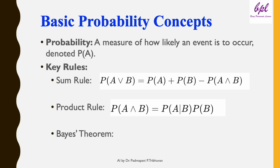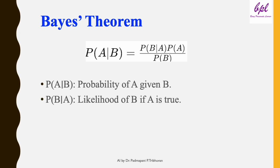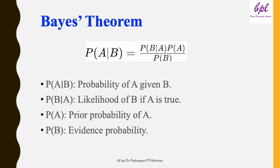And finally we have Bayes' theorem — the star of probabilistic reasoning. It allows us to update our beliefs when new evidence comes in. Bayes' theorem states: P(A|B) = P(B|A) × P(A) / P(B). Here, P(A|B) is what we want to calculate; P(B|A) is the likelihood of B assuming A is true; P(A) is the prior probability of A; and P(B) is the probability of the evidence itself. For example, if A is having the flu and B is having a fever, Bayes' theorem lets us calculate the updated probability of the flu given the evidence of fever.